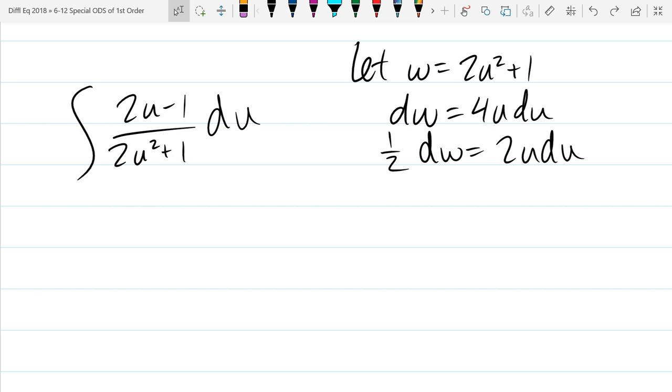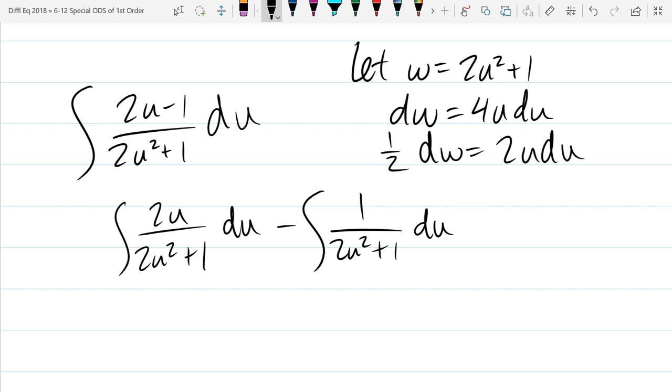Separate that into two parts. So we're going to un-add the fractions, or unsubtract them in this case. So this is integral two u over two u squared plus one du minus integral one over two u squared plus one du. I didn't do any substitution yet. My w sub is perfect for the left integral.